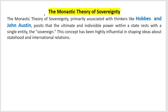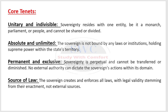As a basic introduction to the monistic theory of sovereignty: Thomas Hobbes and John Austin are the greatest contributors who developed this theory. The core idea is that the power of the sovereign authority is unlimited and indivisible — no question is unquestionable and the power cannot be divided or shared. We will discuss the core tenets and characteristics that define the monistic theory.